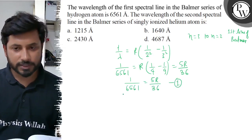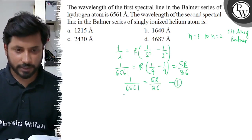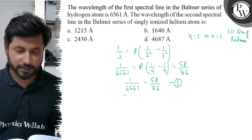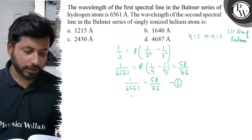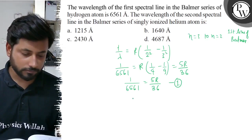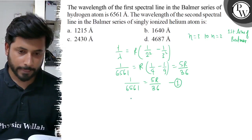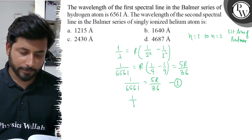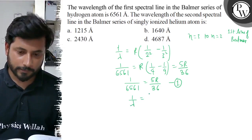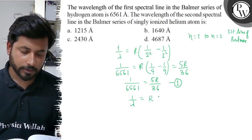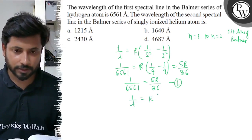Now for the second part — the wavelength of the second spectral line in the Balmer series of singly ionized helium atom. So here we have to put 1 by lambda equals R into Z squared.